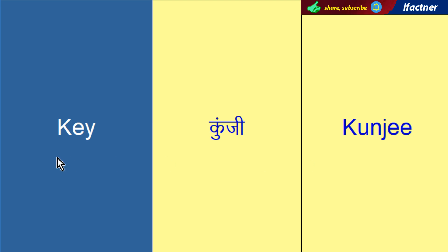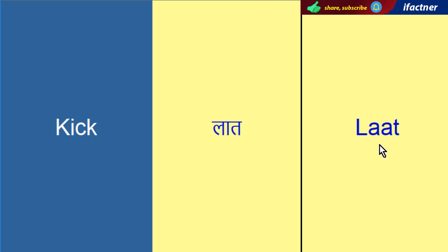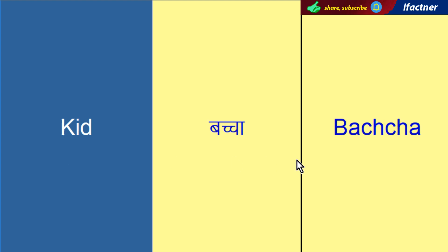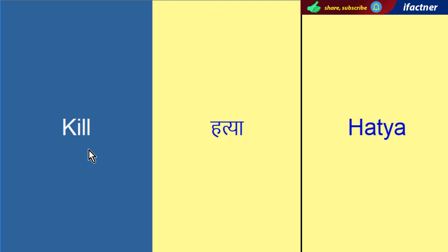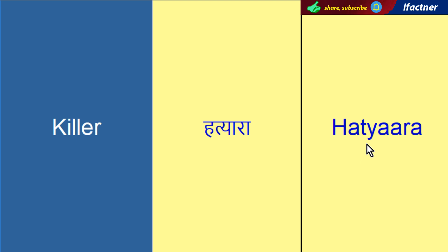Key — Key. Laat — Kick. Baccha — Kid. Hatiyah — Kill. Hatiyarah — Killer.